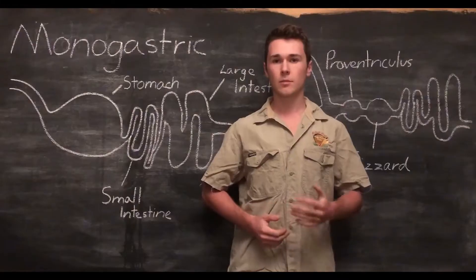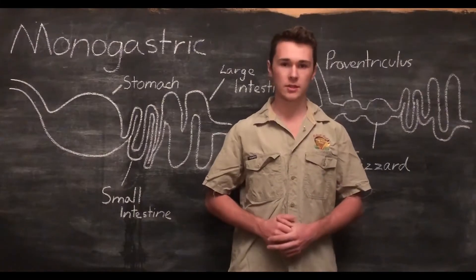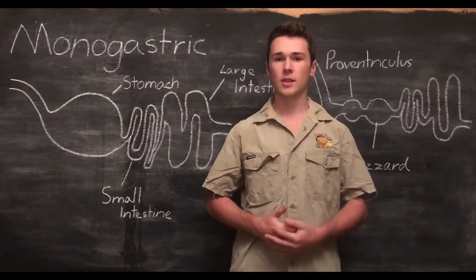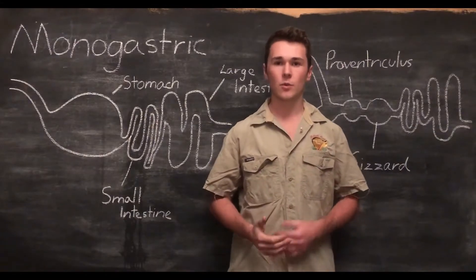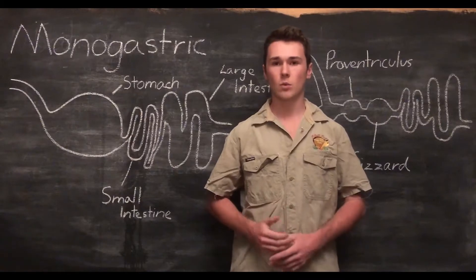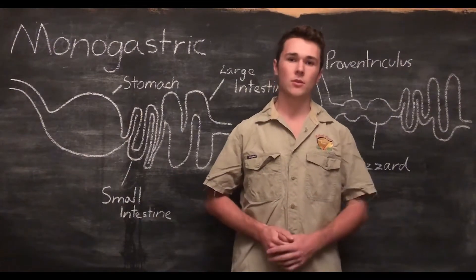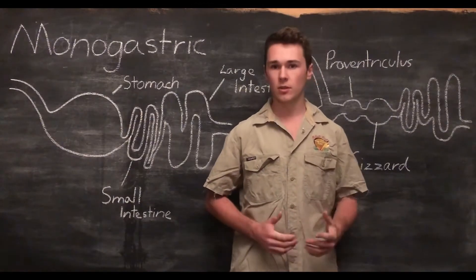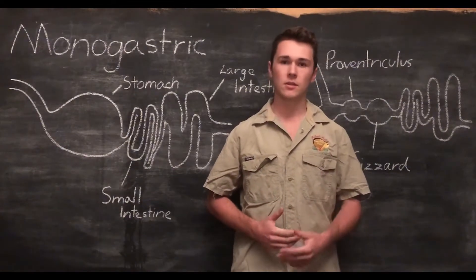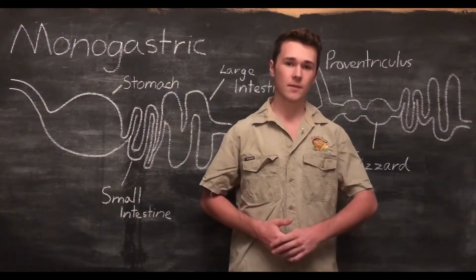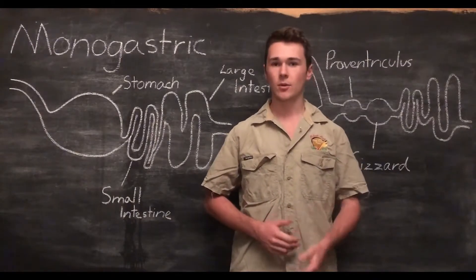A monogastric digestive system is a type of digestive system which only contains one stomach. Animals that use this system include humans, chickens and poultry as a larger group, pigs and horses.